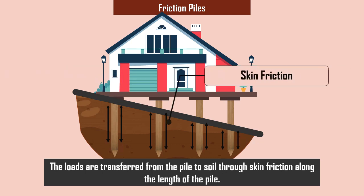Friction piles: in these types of piles, the loads are transferred from the pile to soil through skin friction along the length of the pile.